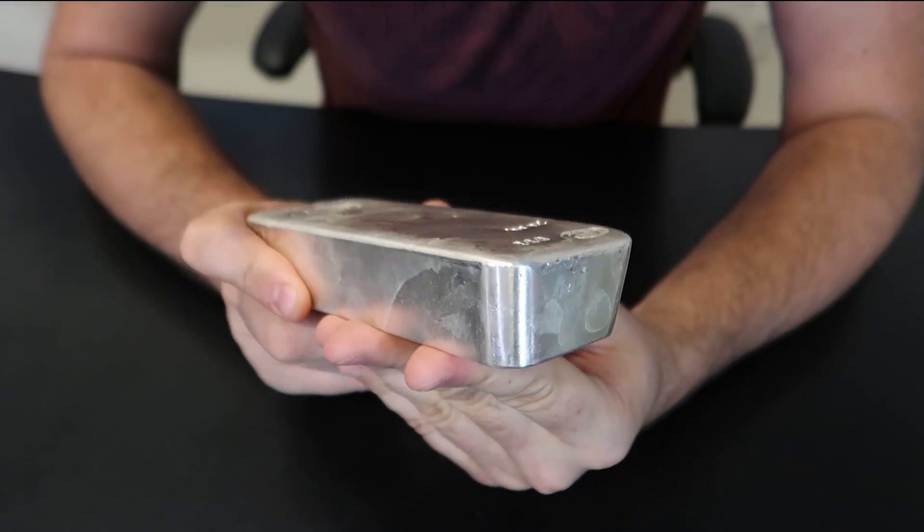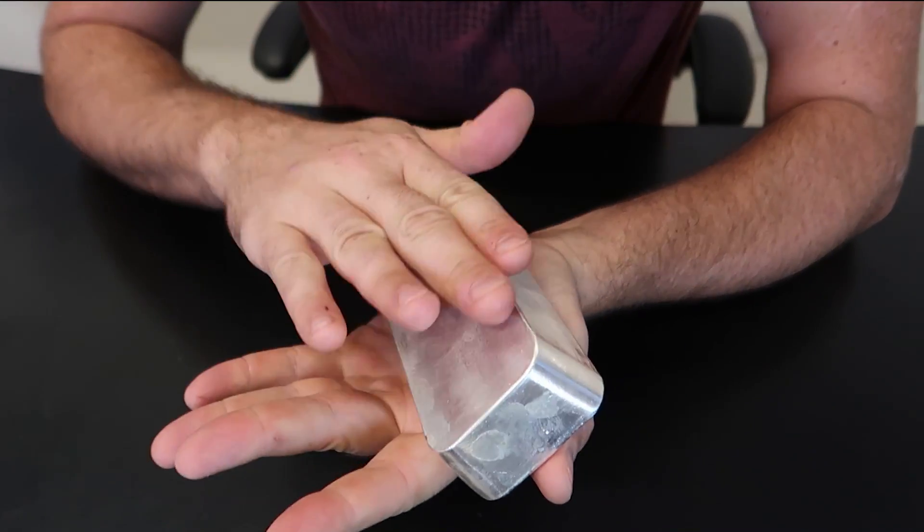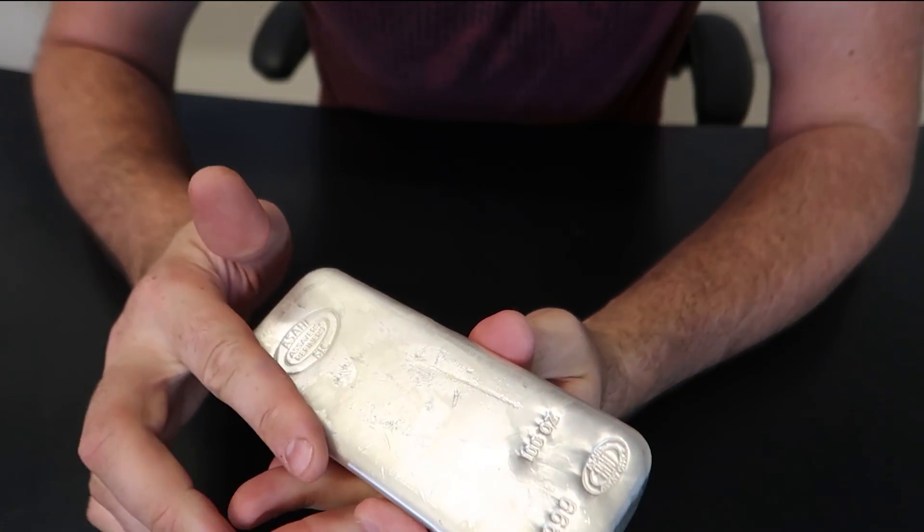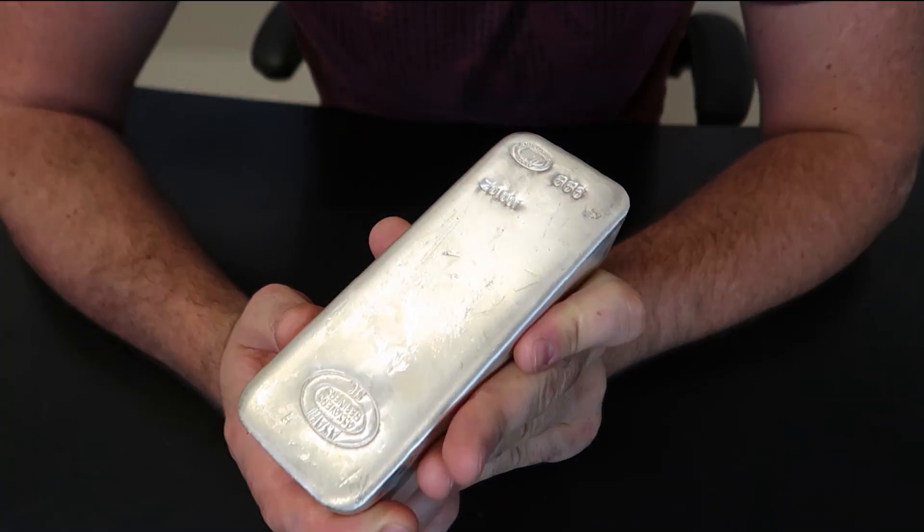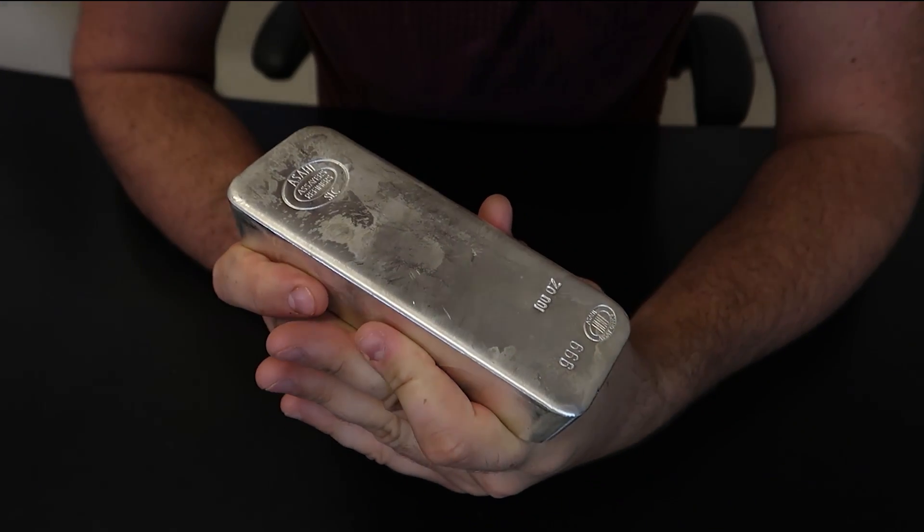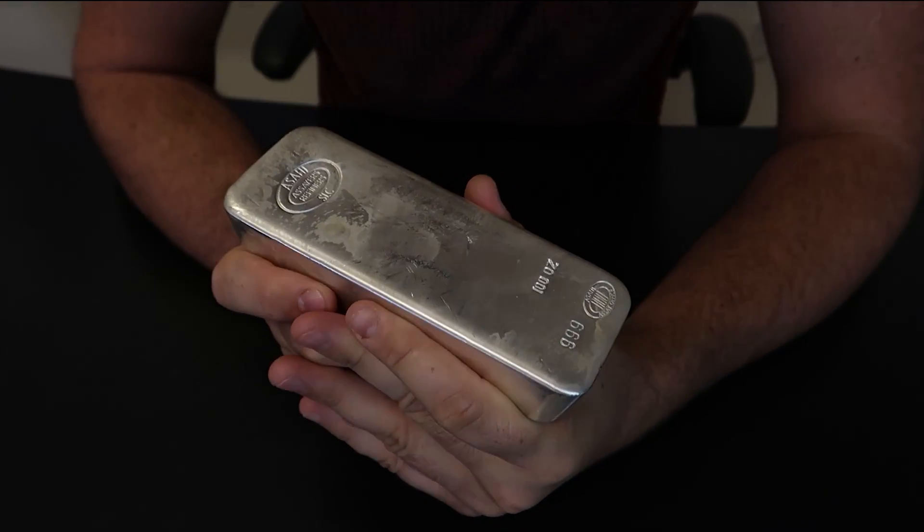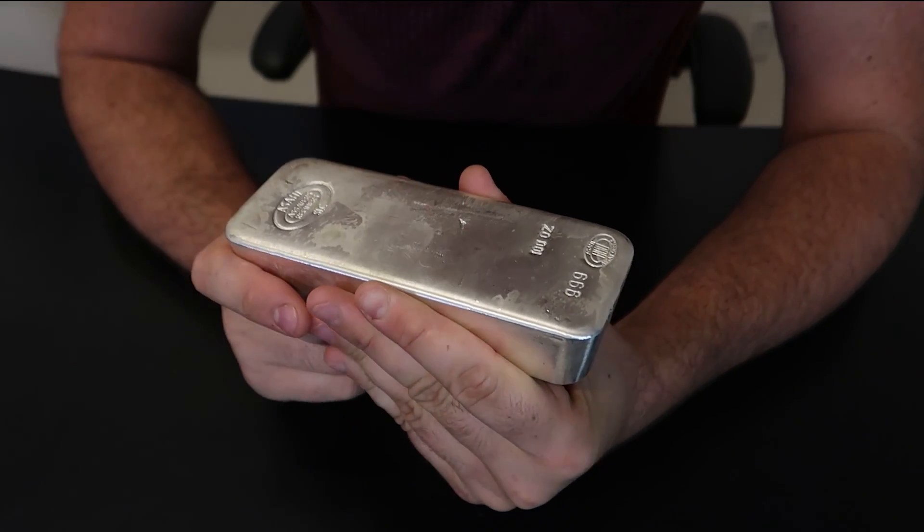You see what I mean by loaf of bread, because it's a poured bar. It's been poured in one of those containers and then there's like crust on top. Very unique, definitely been used, and that's what it means by secondary market.